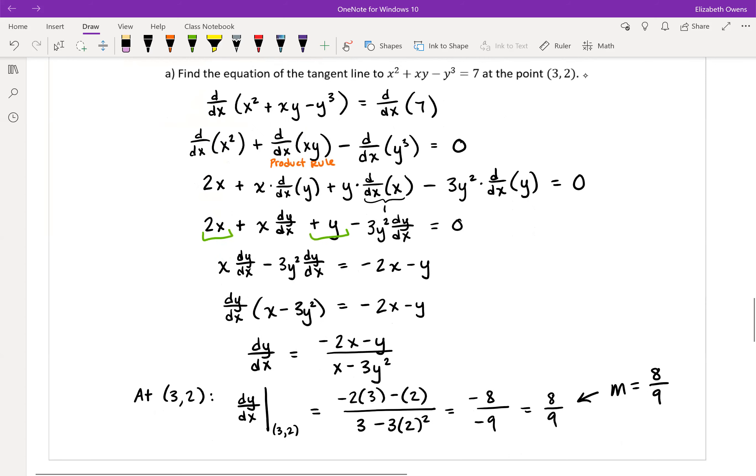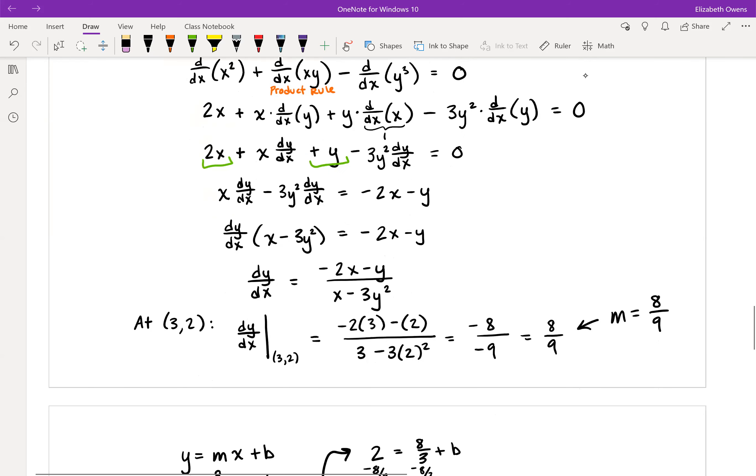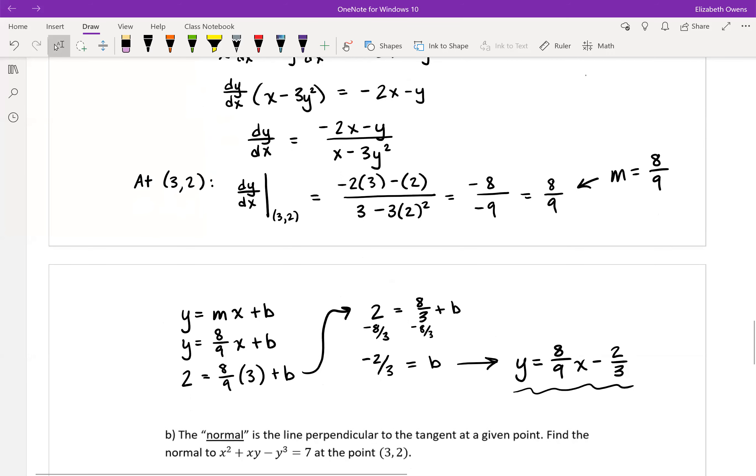We had to do an implicit derivative. We got an implicit result for that derivative, and then to find the slope, we plugged in the values from our point and found the slope of the tangent line and then the tangent line itself.